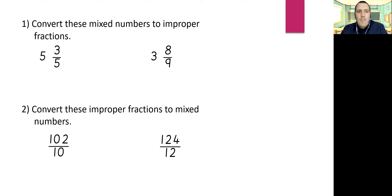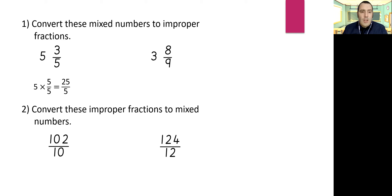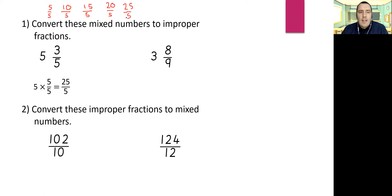Okay, how did we get on with that? Looking at question one, we've got five wholes and three fifths. We know that one whole is five fifths in this occasion, so we need five lots of that. Five fifths times five gives us 25 fifths. So: five fifths is one, ten fifths is two, fifteen fifths is three, twenty fifths is four, and twenty-five fifths is five. That's just another way of multiplying using repeated addition.